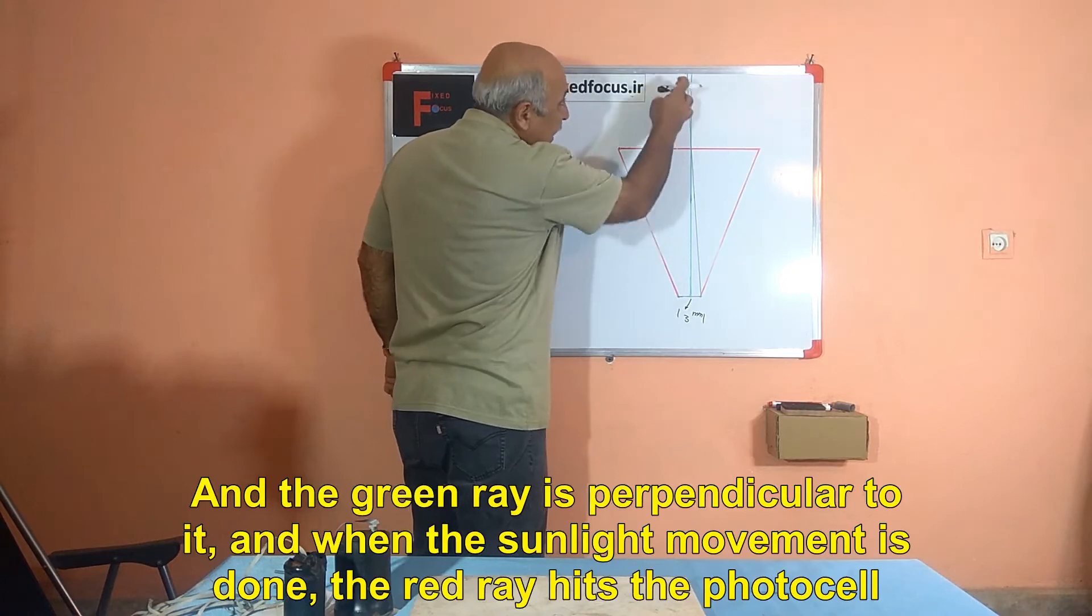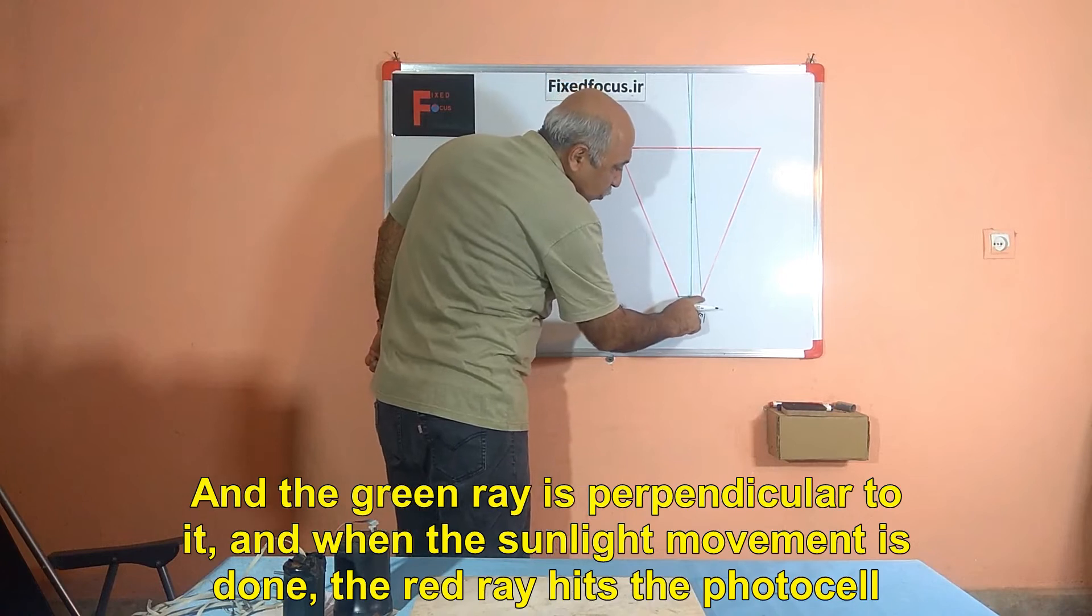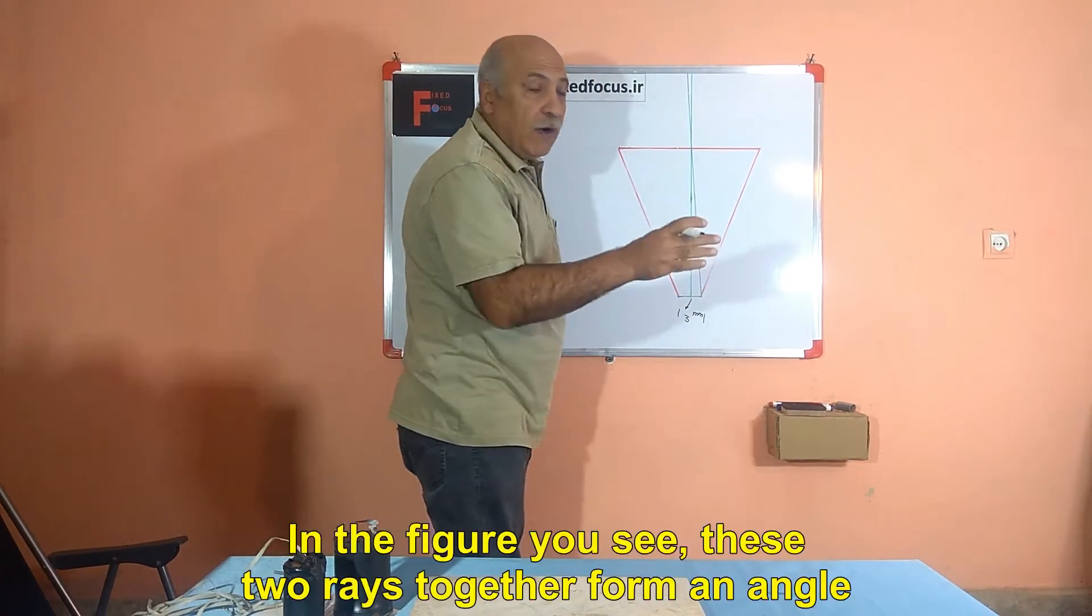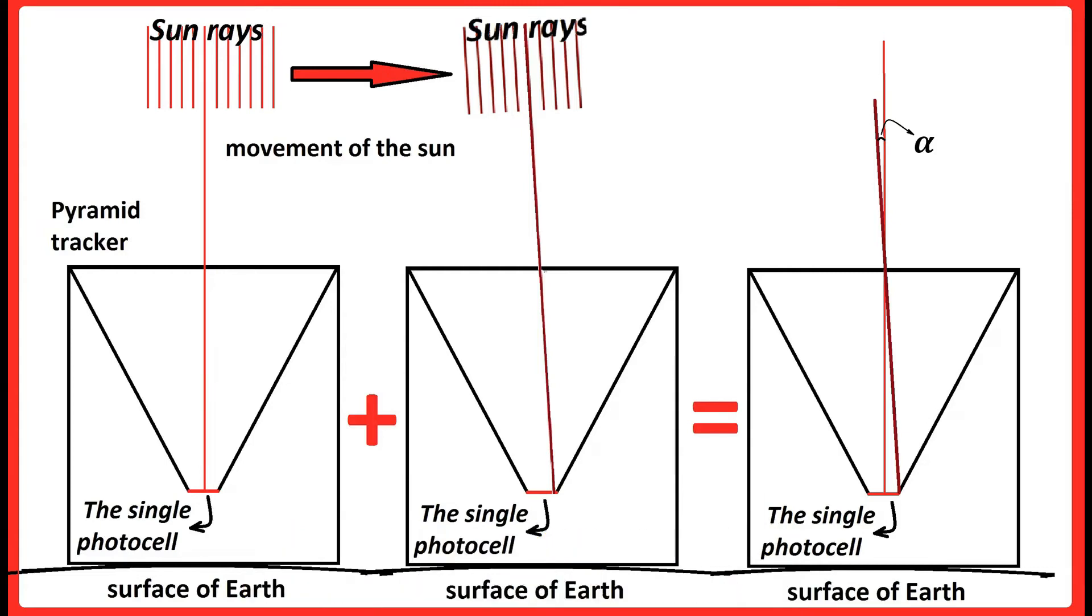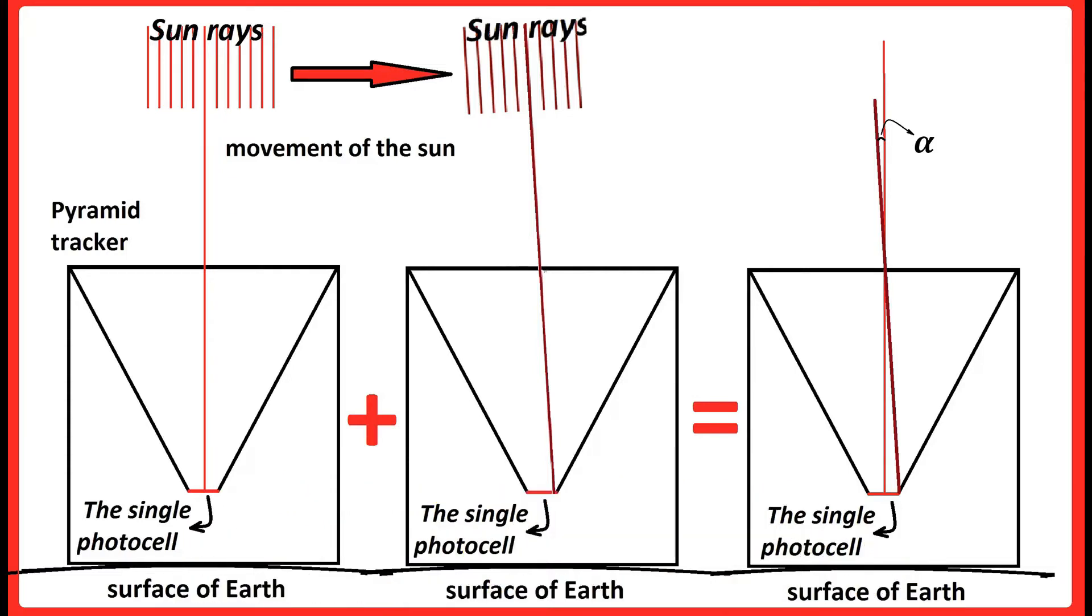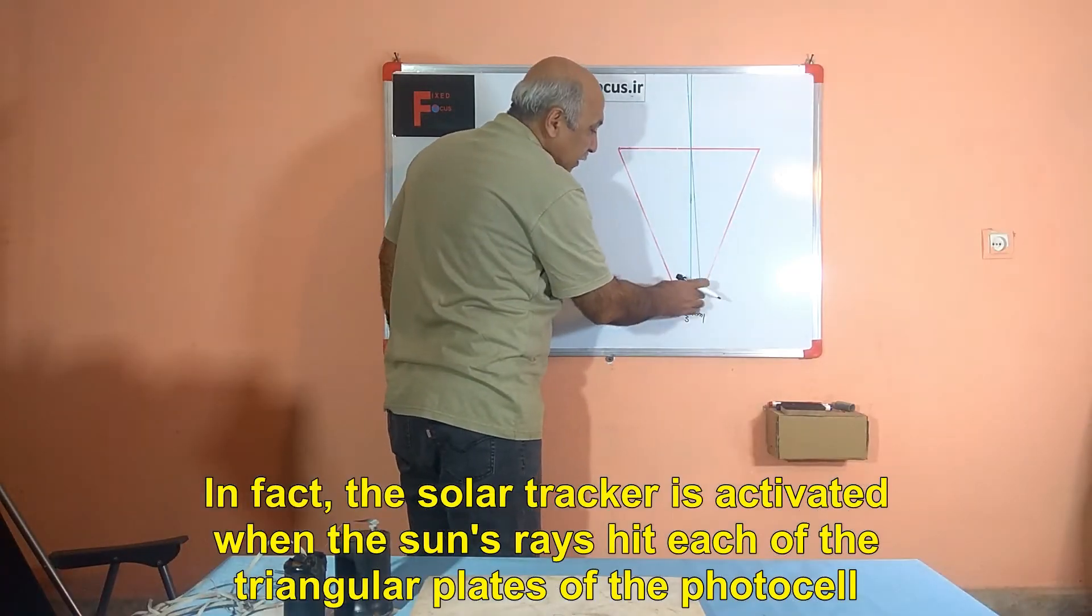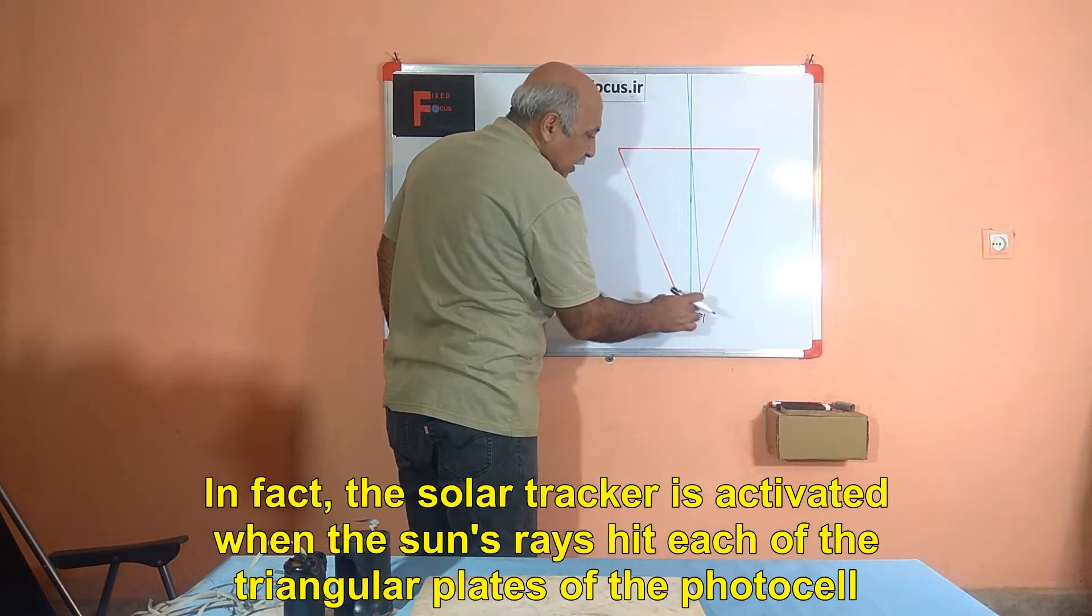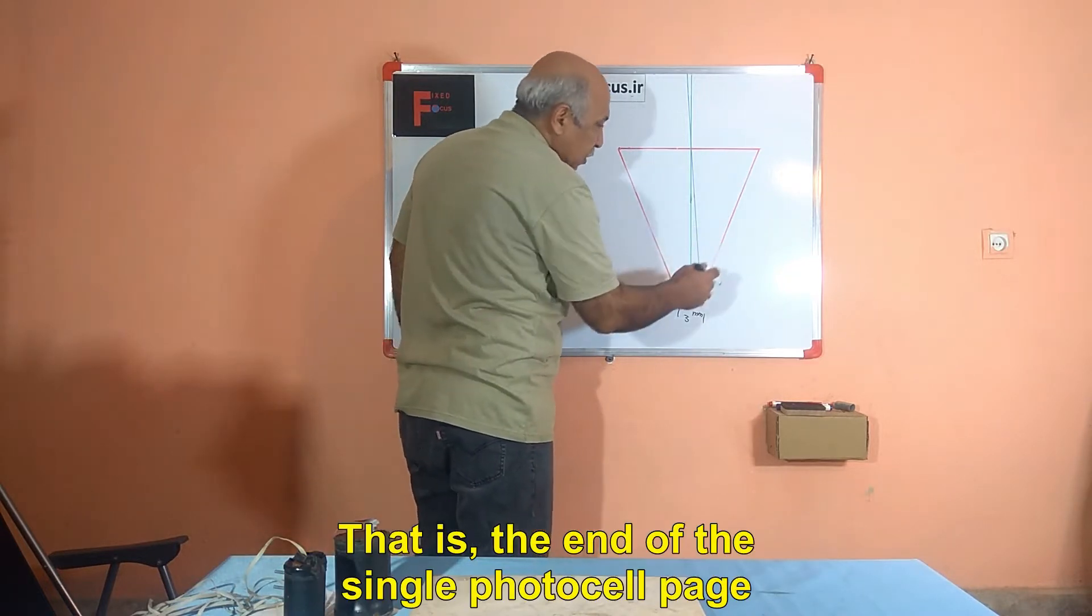And the green ray is perpendicular to it. And when the sunlight movement is done, the red ray hits the photocell. In the figure you see, these two rays together form an angle. In the first case, the rays are perpendicular to the solar tracker. And the next ray occurs after the sun moves. In fact, the solar tracker is activated when the sun's rays hit each of the triangular plates of the photocell. That is, the end of the single photocell page.